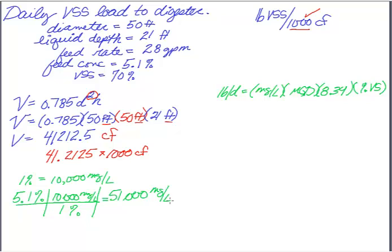51,000 milligrams per liter. So now I have this piece, I have this piece because that's a constant, and they gave me the percent volatile. So the only thing I need now is the MGD, which I did not get. I got a feed rate in gallons per minute. So we will also have to convert that.